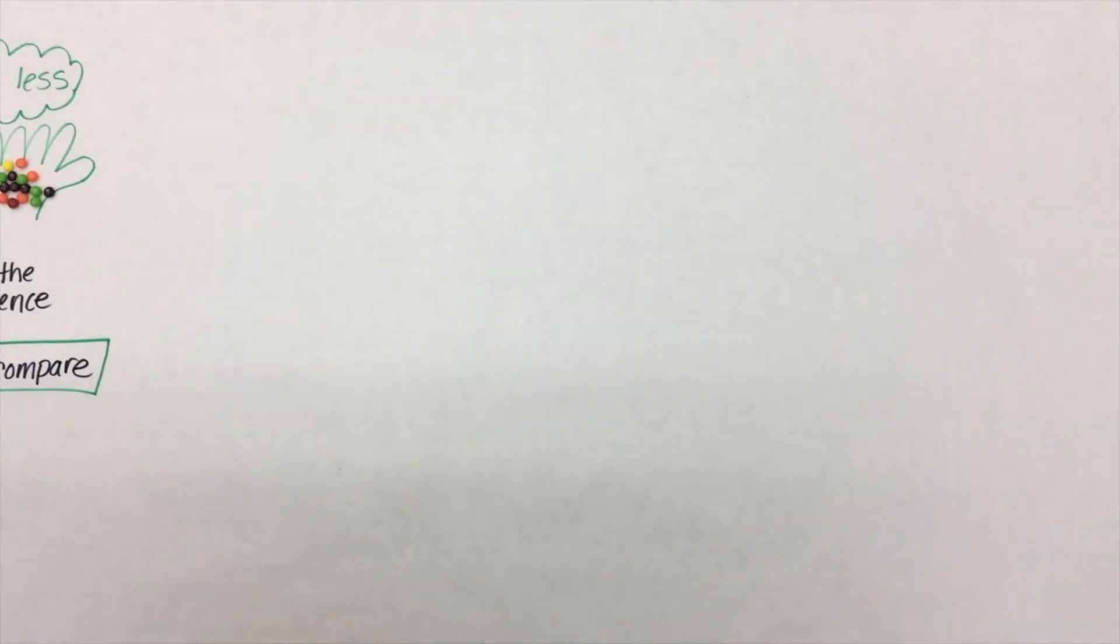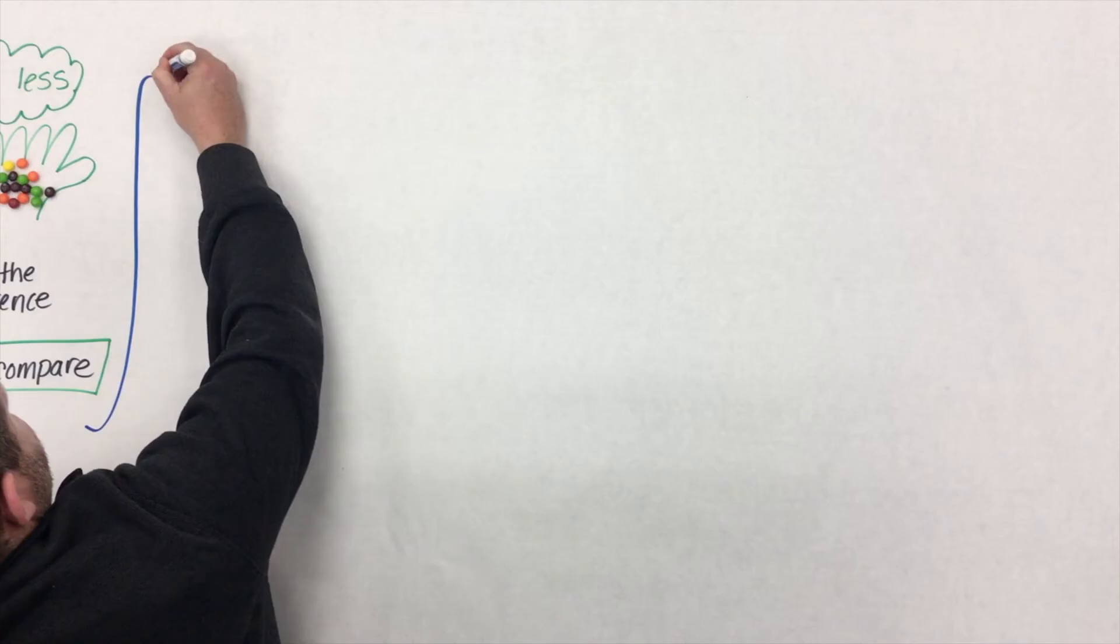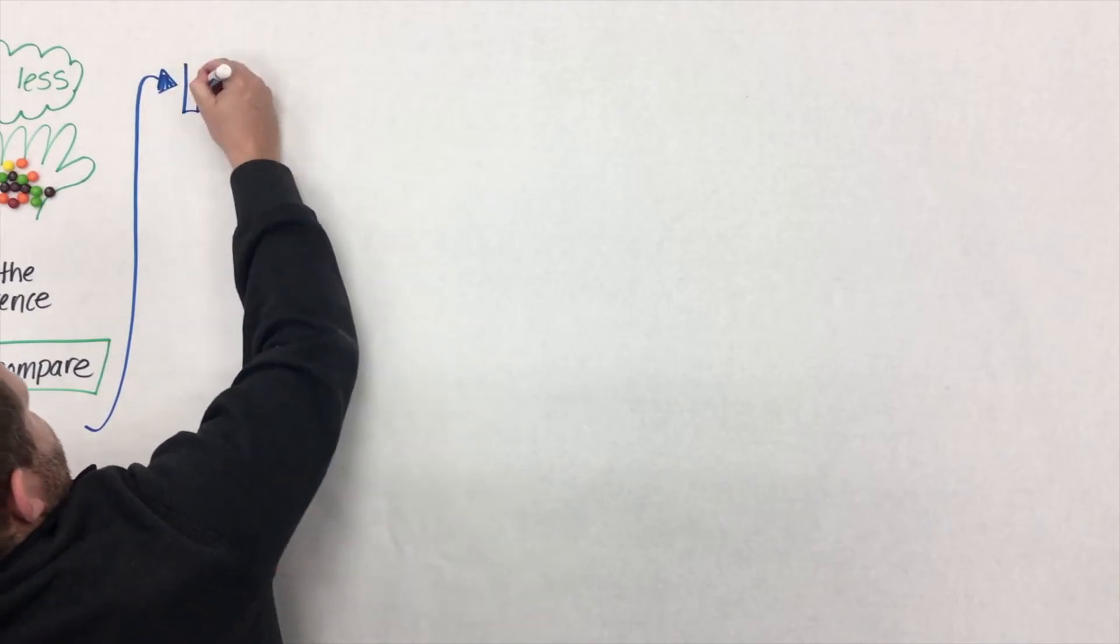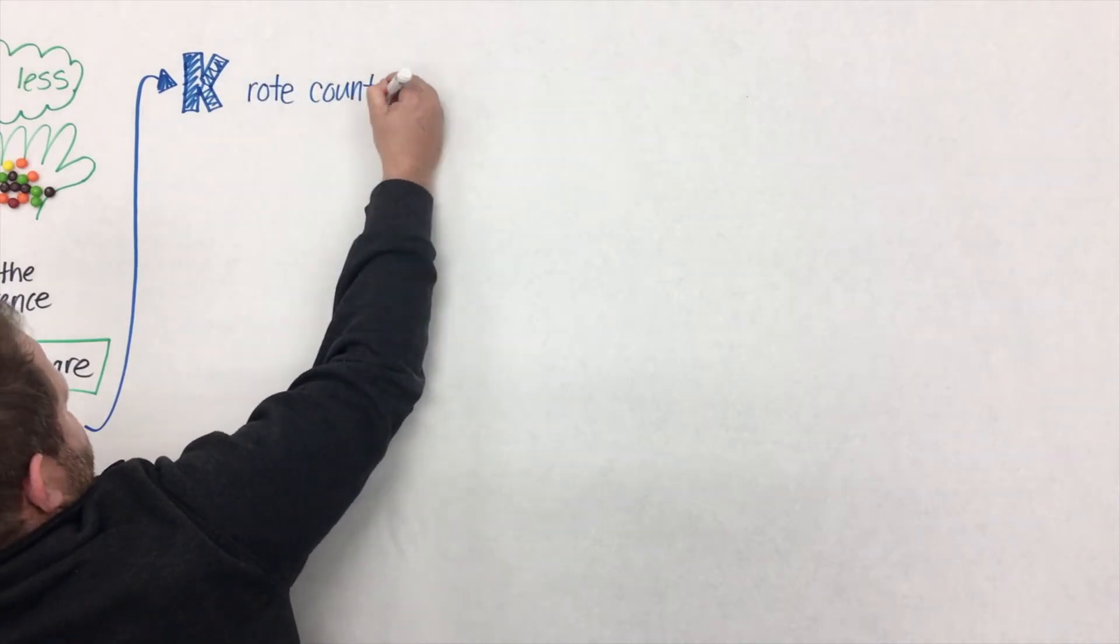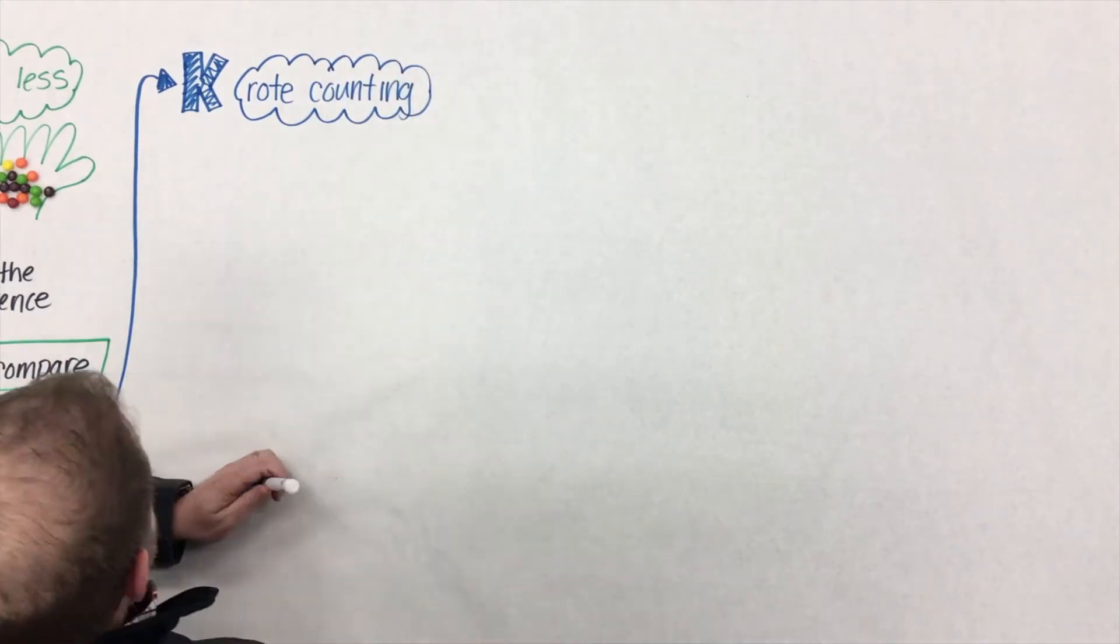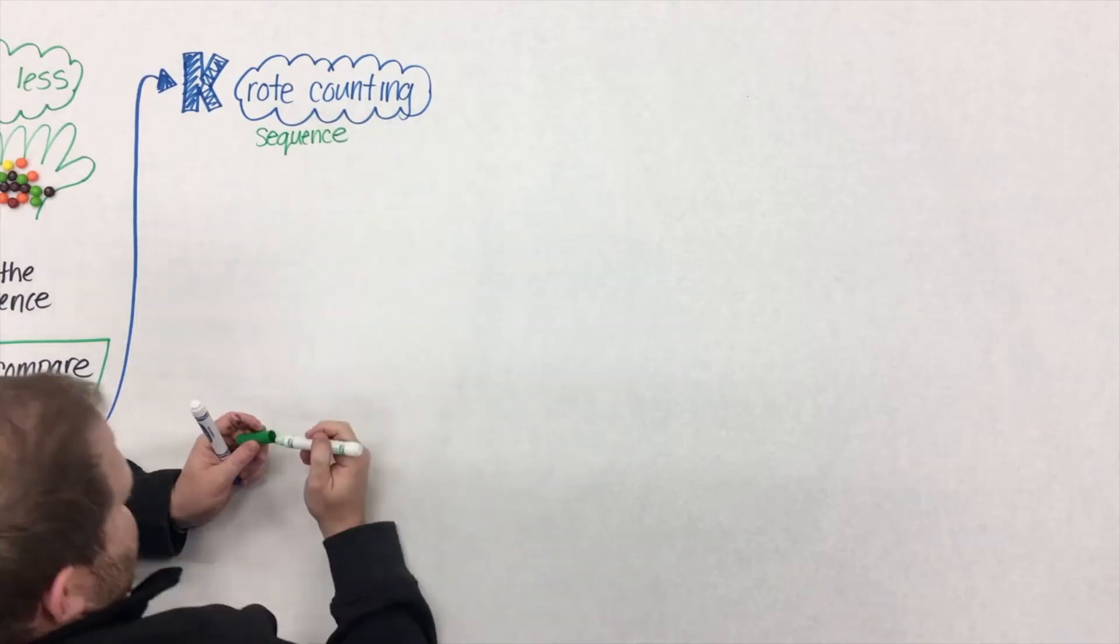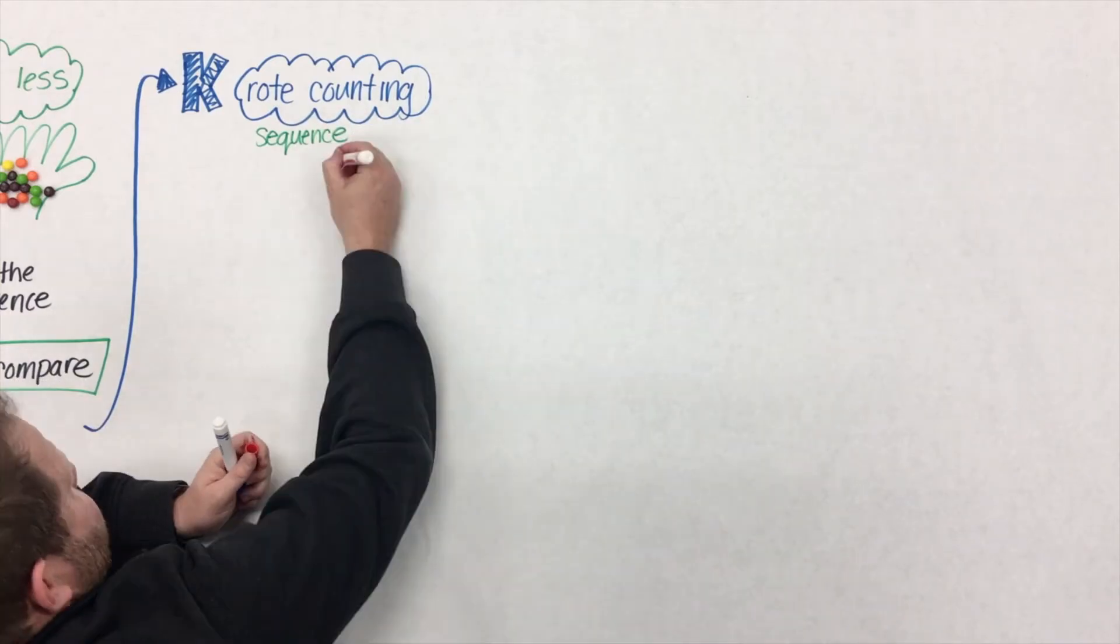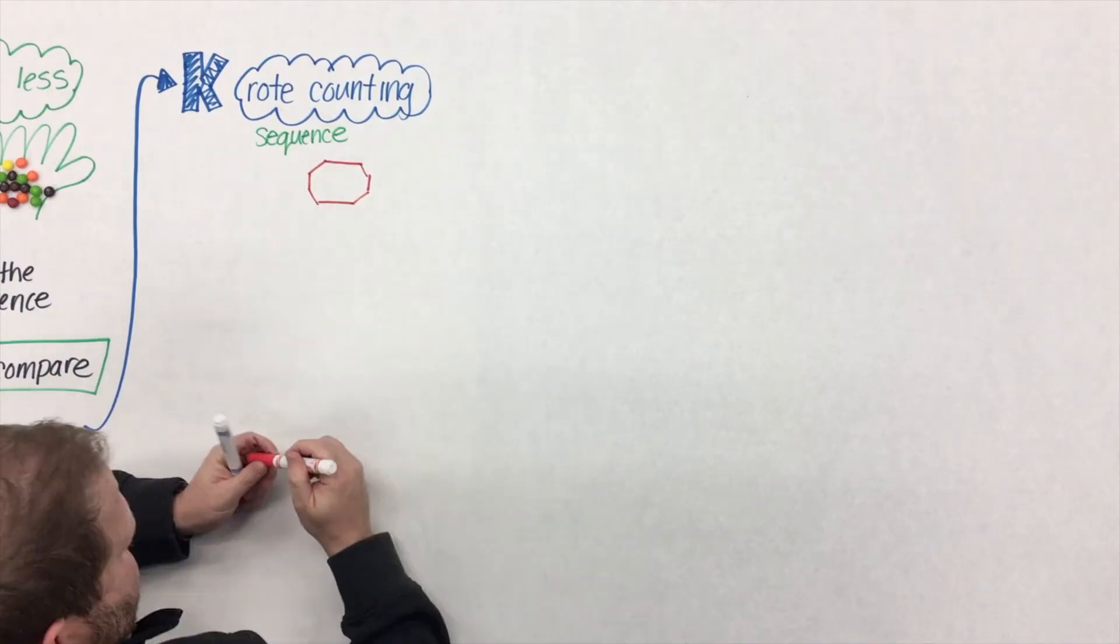When students come to us in kindergarten, we now know that they have this idea of subitizing and more or less that they've been working on. So from there we introduce rote counting. Rote counting is kind of like this: as students are learning the alphabet, they might say LMNOP and have no idea that there's actually letters embedded in there. Rote counting, same thing. Students are just working on that count sequence, the reciting of names.